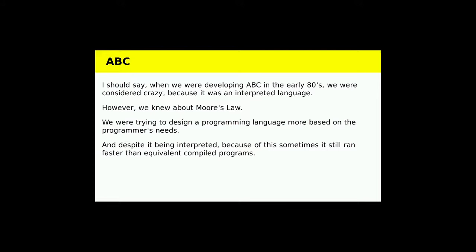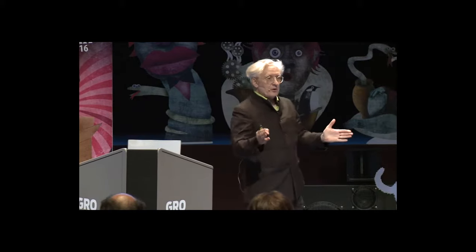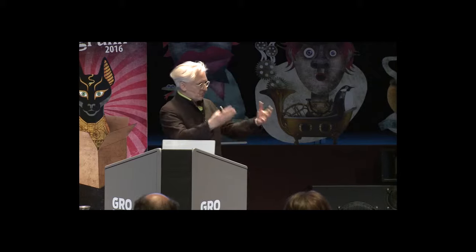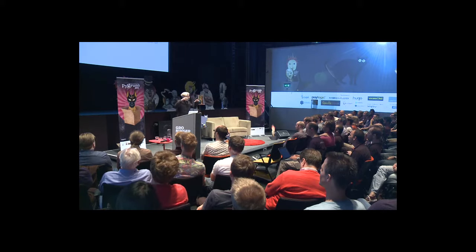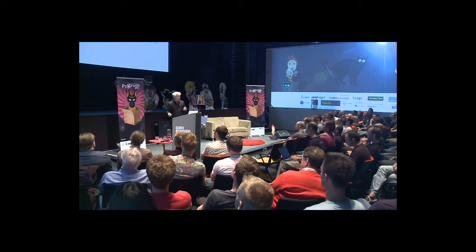When we were first designing ABC starting in 1982, we were considered crazy because we were designing it as an interpreted language. This laptop is about 25 million dry stones, and the computer we had then was 400 dry stones — a massive jump. Computers were very, very slow, and ABC ran very slowly. But we knew about Moore's Law, and we were trying to design a language more directed to the programmer than the computer. Because everything was higher level, very often the programs ran faster than the equivalent compiled program anyway.